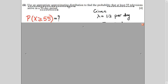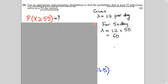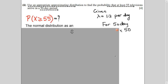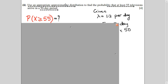The next part says: use an appropriate approximating distribution to find the probability that at least 55 televisions arrive in a 50-day period. First, you will change your lambda. The given lambda was 1.2 per day, and you have to calculate for 50 days, so your lambda will be 1.2 × 50 = 60. At least 55 televisions means probability of x greater than or equal to 55. Now, the appropriate approximating distribution — in your syllabus there are three approximate distributions.